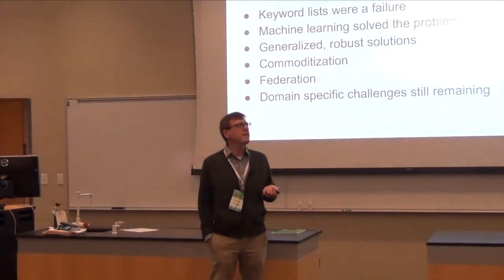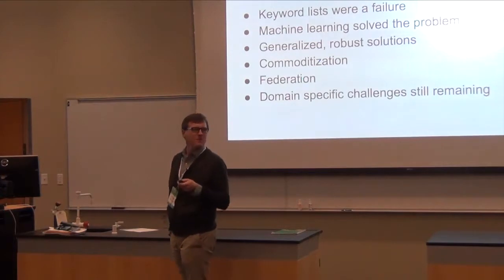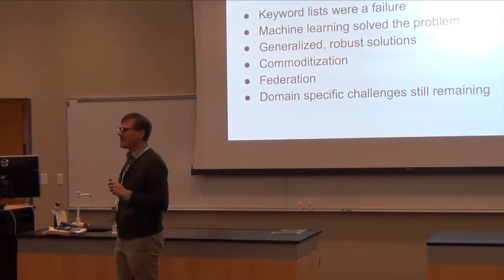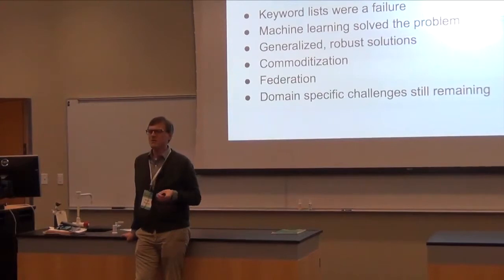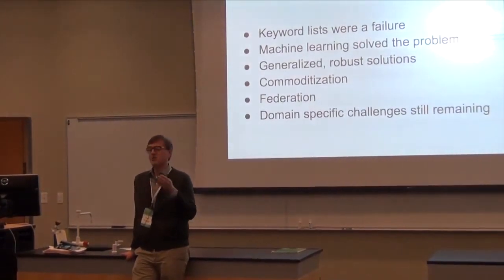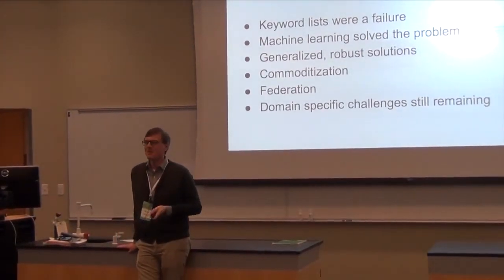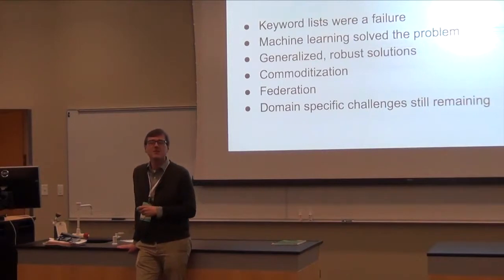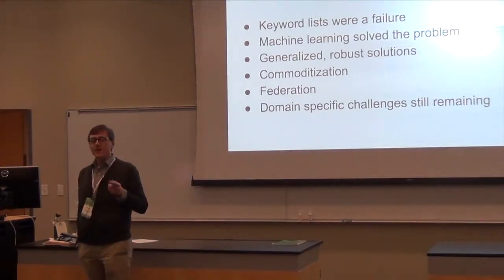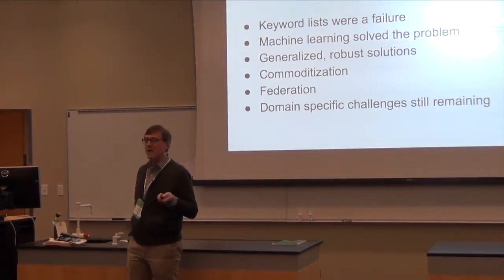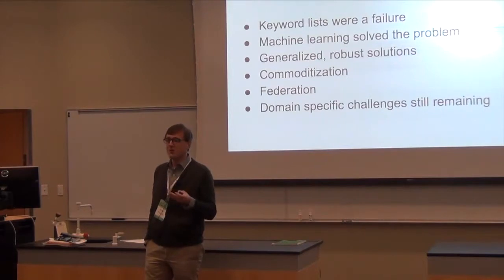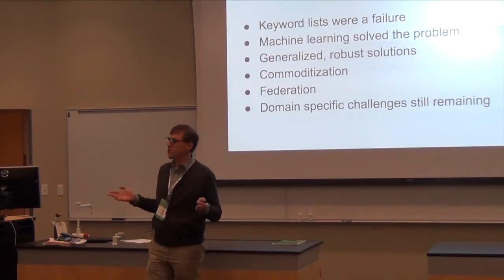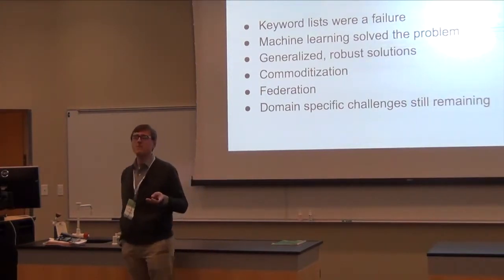An example I'll start with is APIs and spam filtering. Some of you might not remember how painful spam used to be — 9 out of 10 of my emails would be just garbage. Keyword lists were the first idea people had: block anything that looks wrong. But it became very clear that data scientists had to solve this problem, and luckily they did. Not every company needed to solve it over and over again. We now have a very generalized, commoditized solution — Google and a few other players really winning with spam filtering.